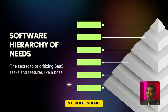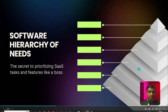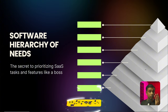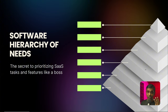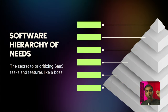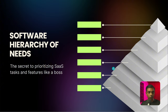Number two is interdependence — each level supports the ones above it, and neglecting lower levels can cause the entire structure to become unstable. Number three is prioritization: the pyramid helps founders, developers, and product managers prioritize their efforts, focusing on the most critical needs. So let's explore each level of this hierarchy starting from the foundation.